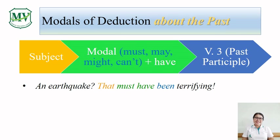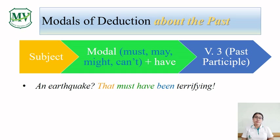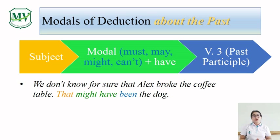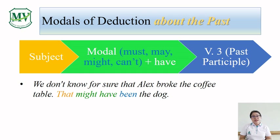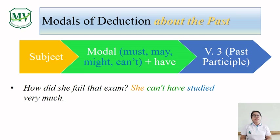When you want to make a guess about the past, you need to form a sentence like this: subject followed by modal and helping verb 'have,' followed by past participle. For example: 'That earthquake must have been terrifying' — the earthquake happened earlier and the speaker guesses it must have been terrifying. 'We don't know for sure that Alex broke the coffee table. That might have been the dog' — we're not sure, so we guessed it might have been the dog. 'How did she fail the exam? She can't have studied very much' — the speaker believes she didn't study, which is why she failed.